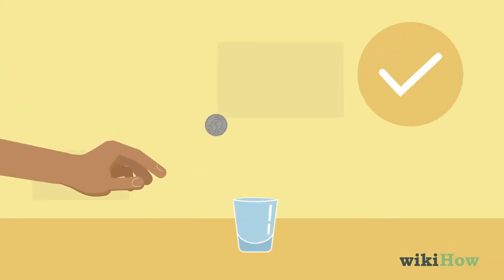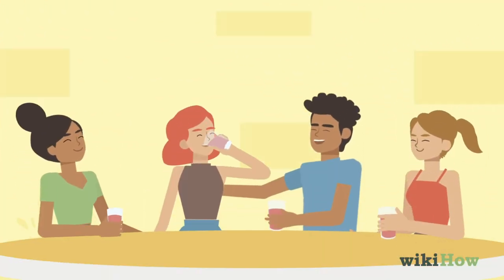If they make the quarter in the glass, they choose another player to take a drink and go again.